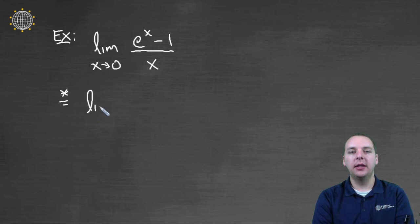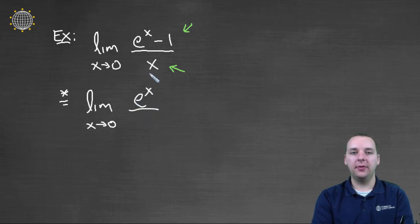This equals lim(x→0) of the derivative of the numerator over the derivative of the denominator. The derivative of e^x - 1 is e^x, and the derivative of x is 1. L'Hopital's rule says this limit's answer is the same as the original limit's answer.